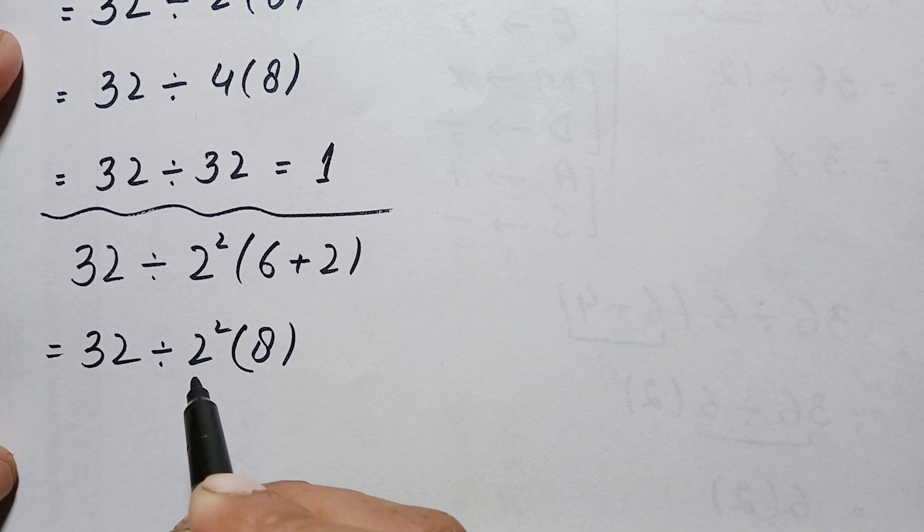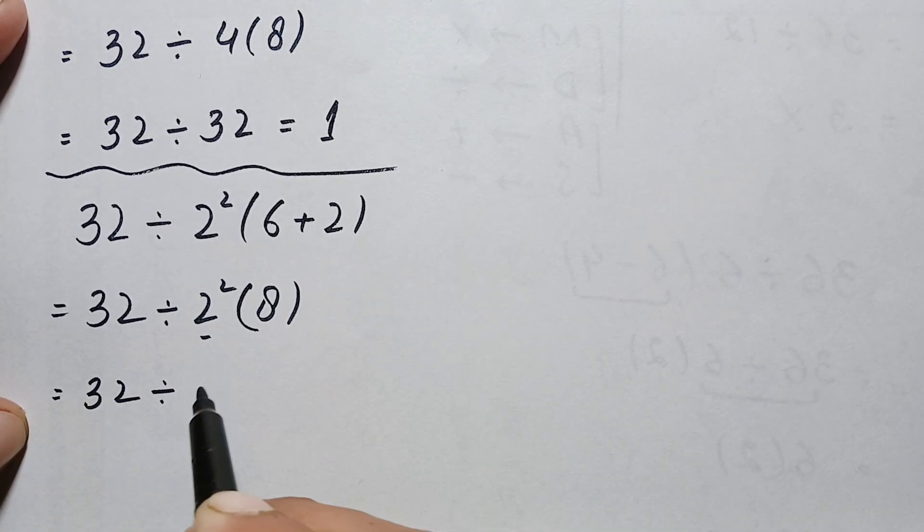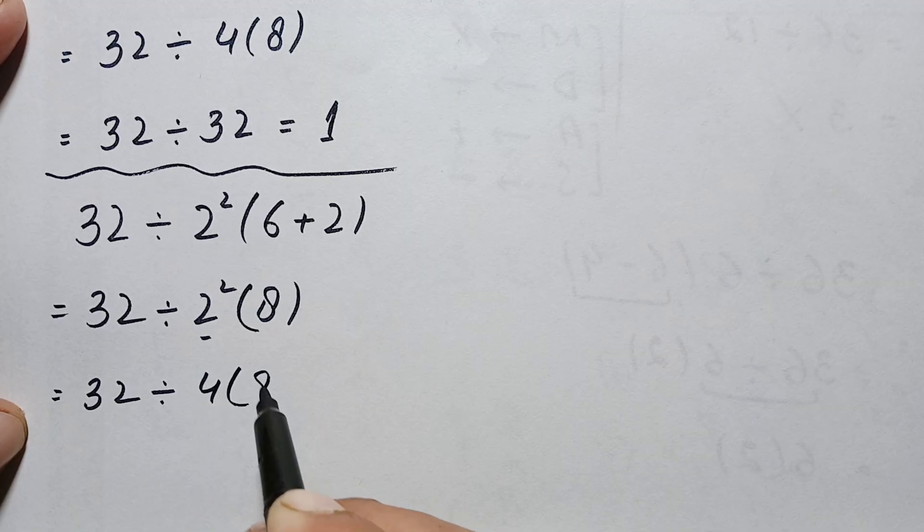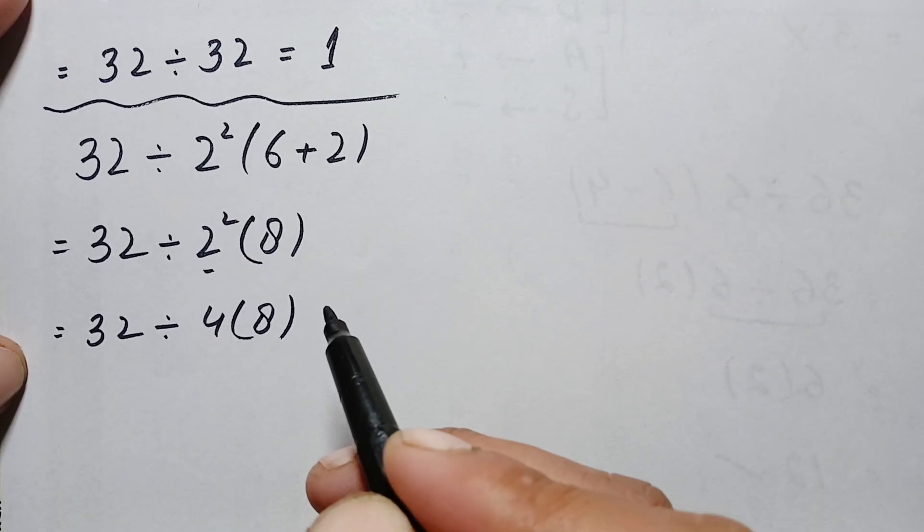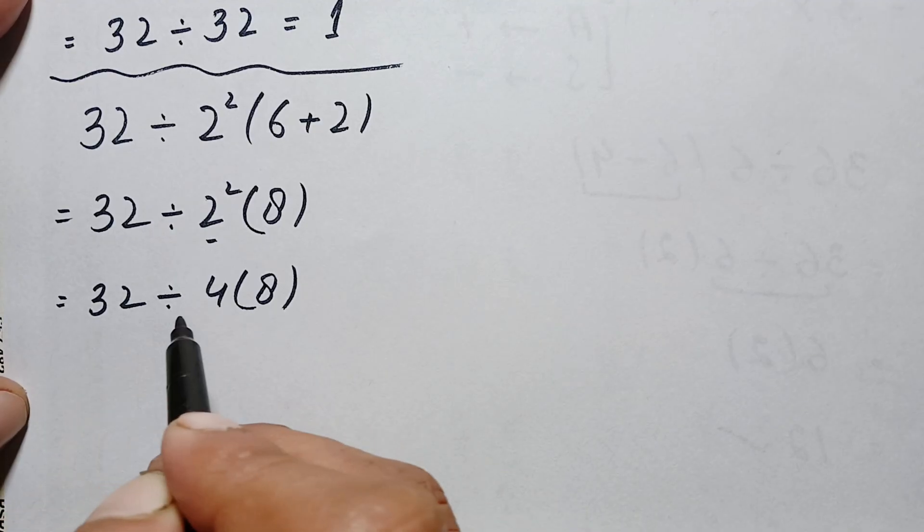Next we have to simplify the powers or exponents. So this is again 32 divided by 2 squared, which is simply 4, times 8. Here we have two operations, division and multiplication, so we will first do the division from the left side and then multiply it with 8.